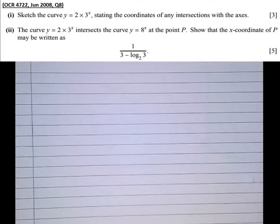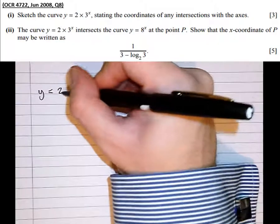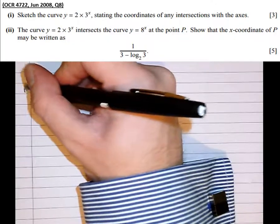Getting straight into it, it asks us to sketch the curve y equals 2 times 3 to the x. So y equals 2 times 3 to the power of x is part 1.